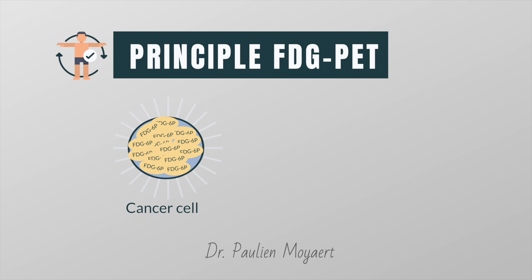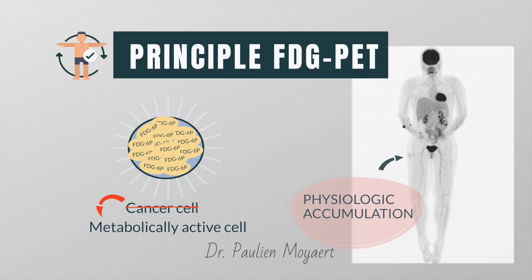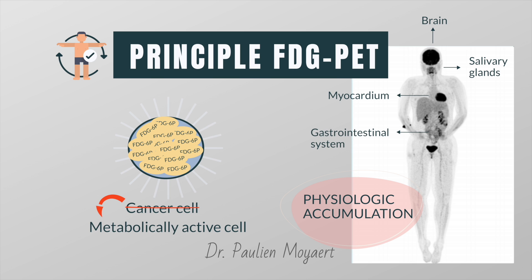Unfortunately for the interpreting physicians, FDG is not a cancer-specific agent — other types of metabolic activity may also show increased uptake. Sites of physiologic accumulation of FDG include organs which normally use glucose, including the brain, salivary glands, myocardium, the gastrointestinal system, and the urinary system.